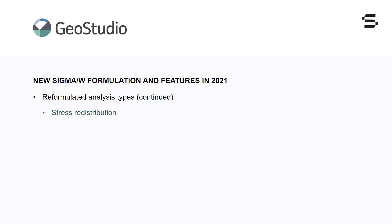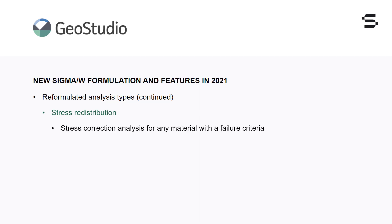A stress redistribution analysis is a critical aspect of modelling geotechnical problems with non-linear material behaviour. This analysis type is used to ensure that the stress state in the soil obeys the failure criteria before conducting a load deformation analysis, to calculate the stability of a geotechnical structure, and to conduct limit state design. The new stress redistribution algorithm in Sigma W is capable of doing a stress correction analysis for any material model with a failure criteria.